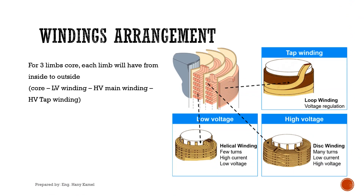Windings arrangement. For a three-phase transformer, each phase will be on a limb or leg. Each limb will have, from inside to outside: core, then low voltage winding, then high voltage winding, then high voltage tap winding, also called regulating winding, as we can see in the picture.